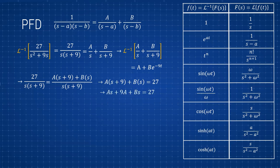Distributing, we get As + 9A + Bs = 27. This gives us one equation with two unknowns, so we split it into two equations. For the constant terms: 9A = 27, so A = 3. For the s terms: A + B = 0, so B = -A = -3.